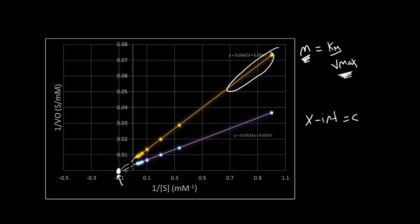And the reason the x-intercept is the same is that if you were to rearrange this equation and figure out what the x-intercept is, the x-intercept is equal to negative one over Km. So in this case our x-intercept is negative 0.1, so the Km for these reactions is actually 10, and we see that it's the same for both of them.